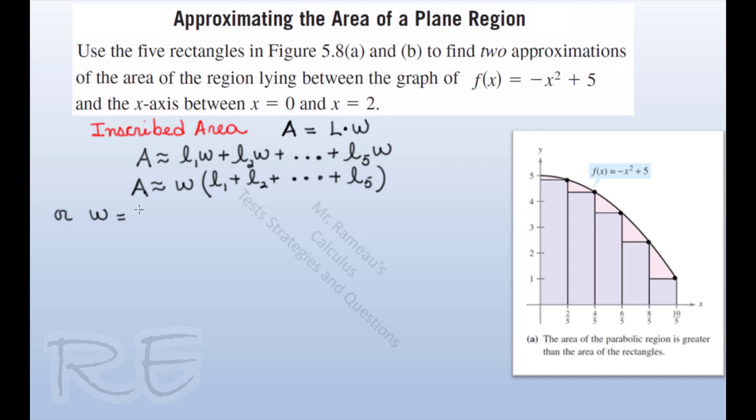Now W will be 2 minus 0 over 5. That's the equal width, which will be two-fifths.